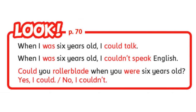This lesson is about ability. When we want to talk about ability in the past, we don't use 'can' — that's for the present. For present ability we say: 'I can speak English,' 'I can drive a car,' 'I can write a short paragraph.' But in the past, we should use 'could' or 'couldn't.' For example: 'When I was six years old, I couldn't speak English.' 'Could you rollerblade when you were young?' You can say: 'Yes, I could.' Or: 'No, I couldn't.'